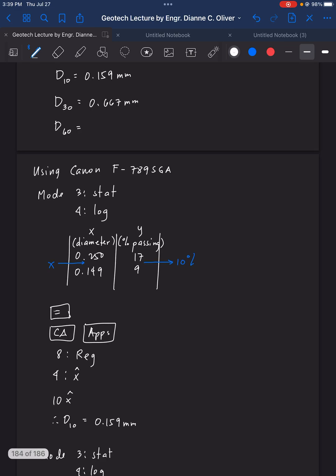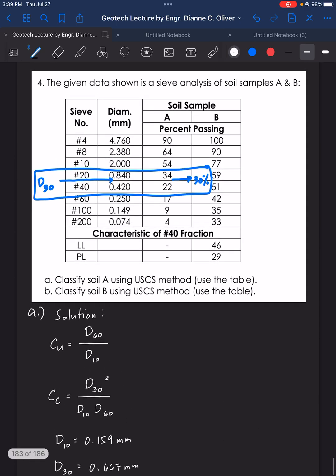Now, for D60, again, you need to click there, mode, stat, log. And then, we have now our column. Now, for D60, it's our 60% passing here. That's in between 64 and 54. This is your 60%. This is your D60. We will concentrate here for our calculator. We will input 2.38 and 2, and then we have 64 and 54.